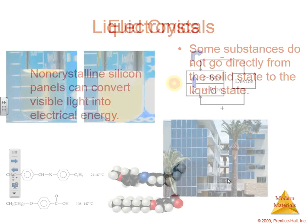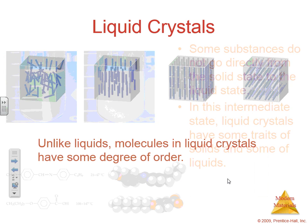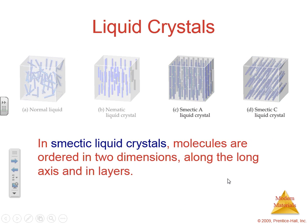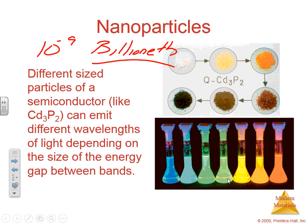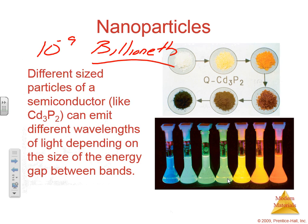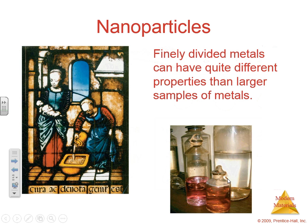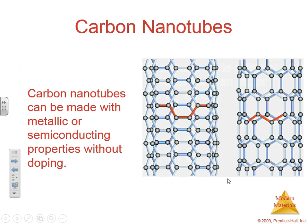The last thing I want to touch on — ignoring the liquid crystal part — is nanoparticles. Nanoparticles are different-sized particles of semiconductors that can emit different wavelengths of light depending on their size and energy. They are defined as particles smaller than a billionth of a meter in size. They act differently at that size than they do when together as a metal. Nanoparticles can be used in medicine and electronics, and their properties differ in smaller quantities compared to when combined as a bulk metal.